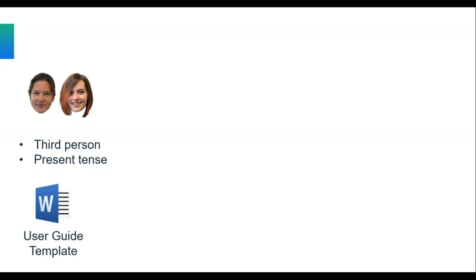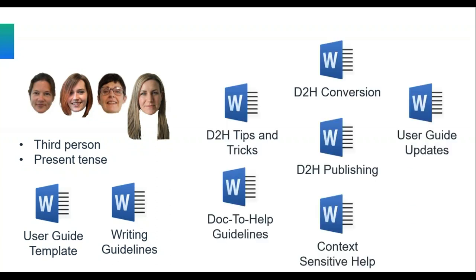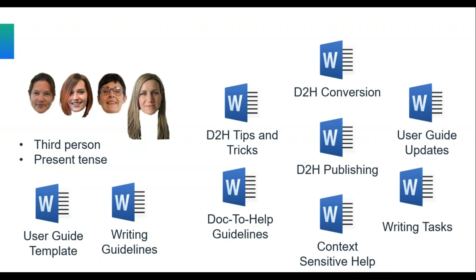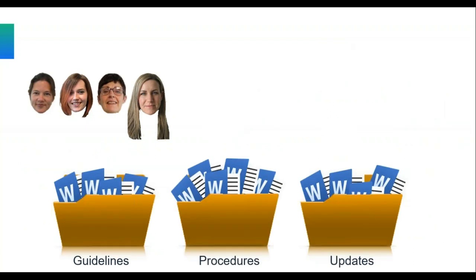As we expanded the team and Elaine and Caroline came on board, we wanted to give them more help to get up to speed quickly. So we created our writing guidelines document, which had guidelines for how to document a standard screen within the software, things like styling — applying bold to field names. As we went on and started doing more with our help, we added more guideline documents for things like source control and context-sensitive help, all stored in separate folders within a shared drive.